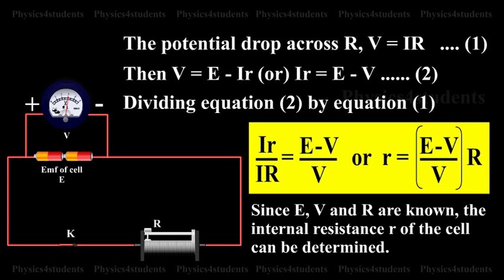Since E, V, and R are known, the internal resistance r of the cell can be determined.